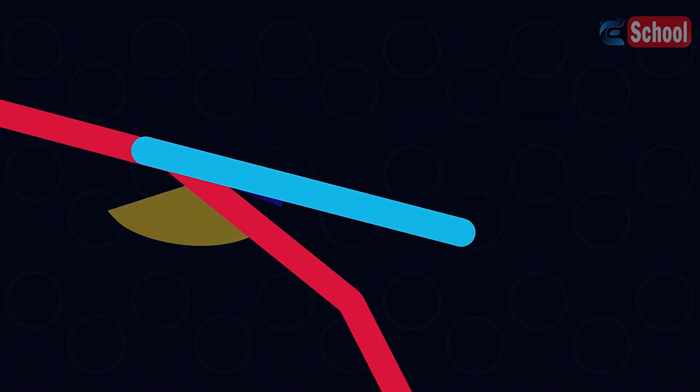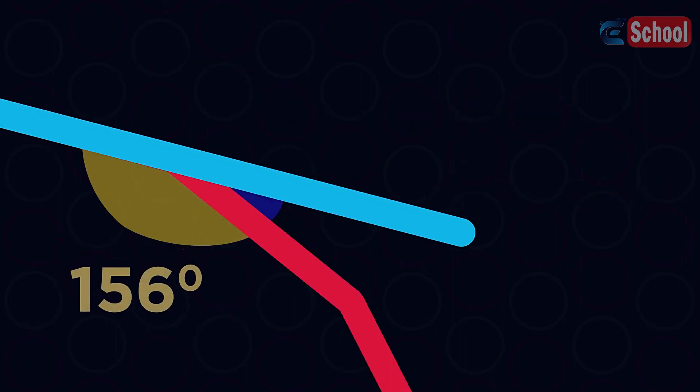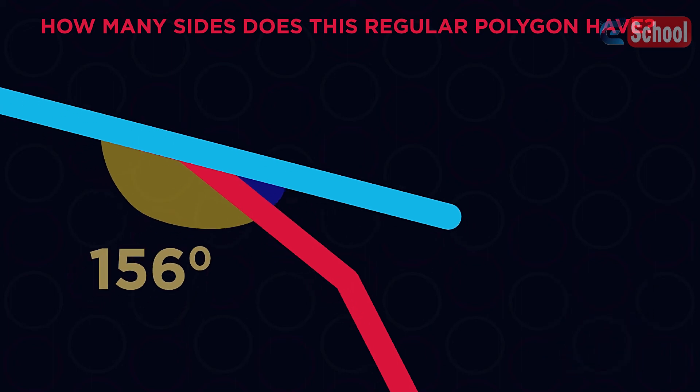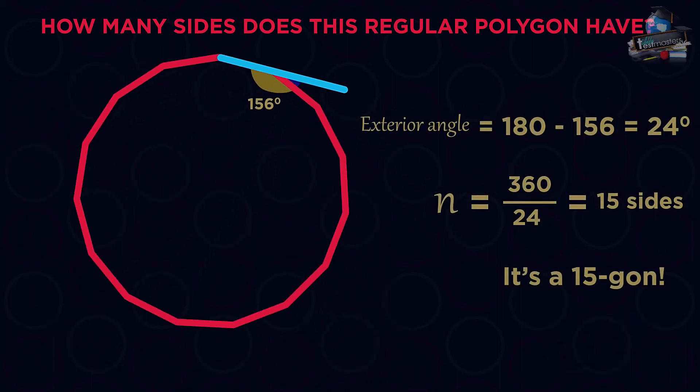Here's one for you to do. How many sides does this regular polygon have? Pause the video, work it out and click play when you're ready. Did you get it right? It's a 15 sided polygon.